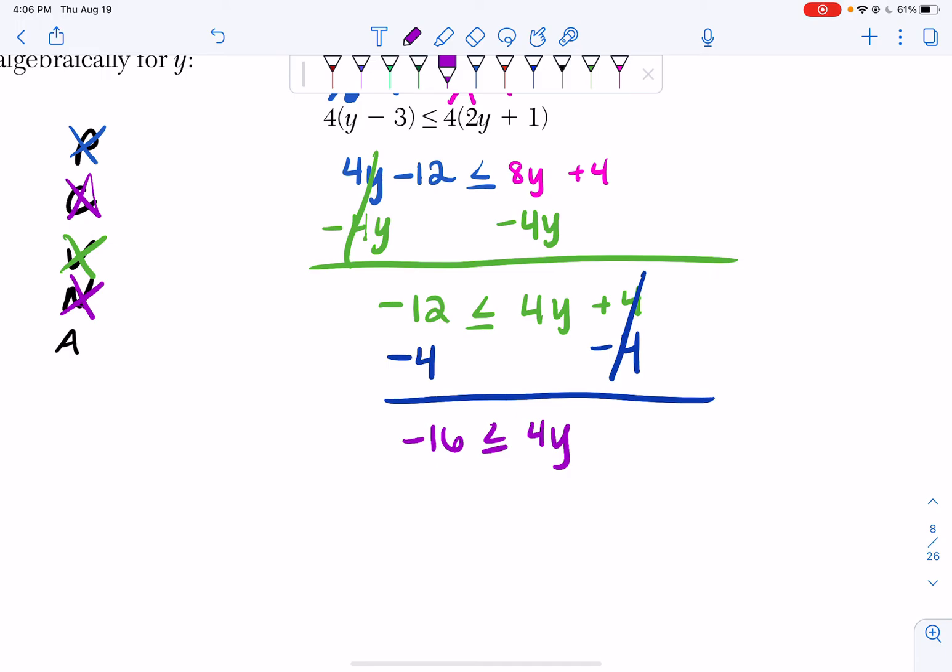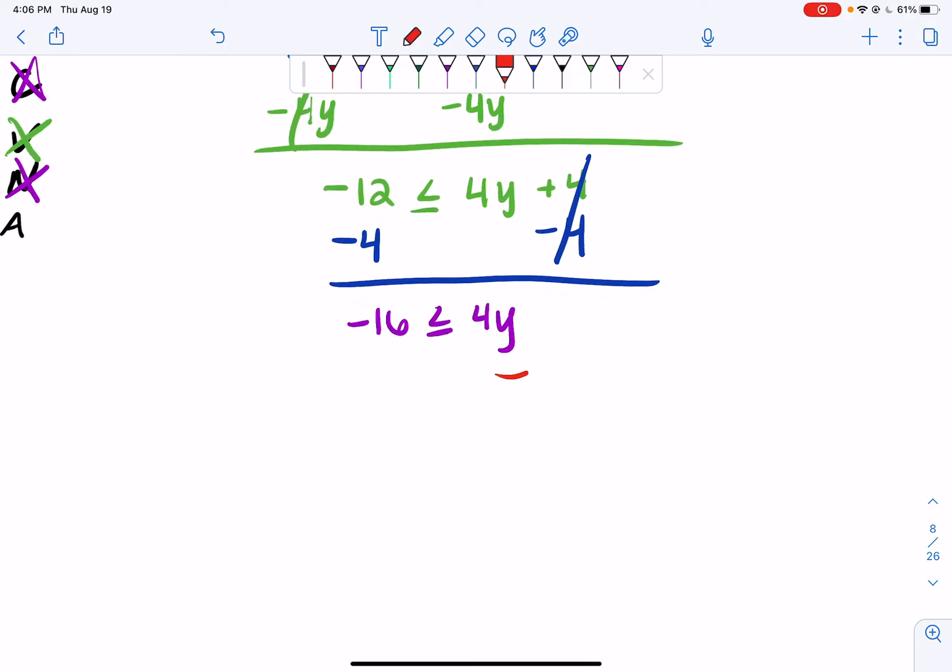Now my final step is to get rid of the number attached to my variable by dividing. So I'm going to divide both sides of my inequality by 4. If I look, my 4s cancel, so I get y, my less than or equal sign, and negative 16 divided by 4 is negative 4.